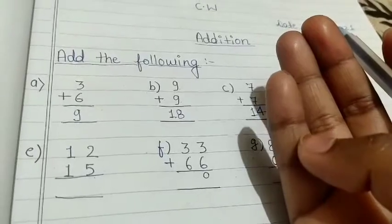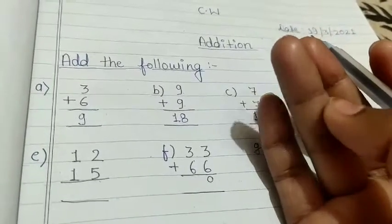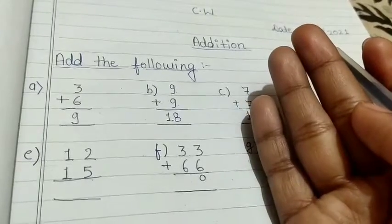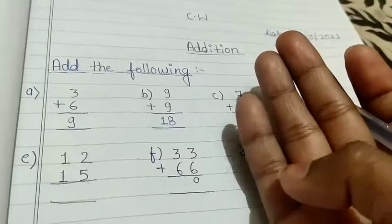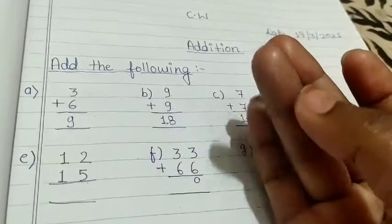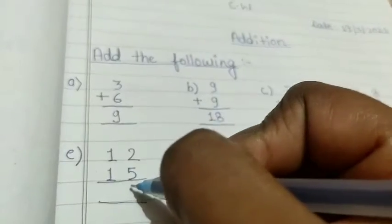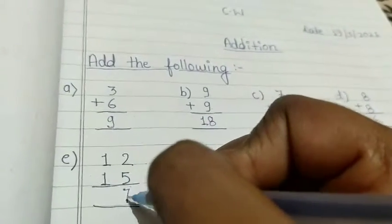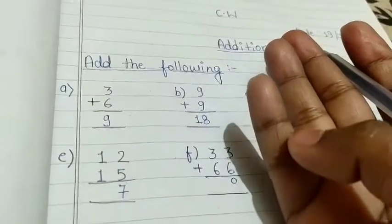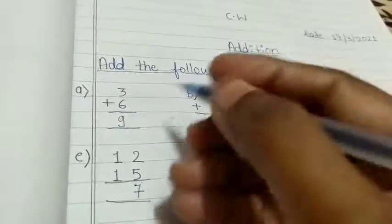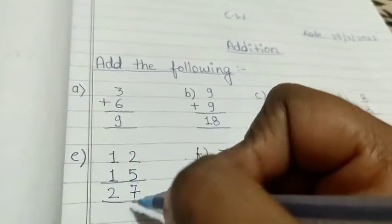Now problem e: two plus five. Count two — one, two. Add five — one, two, three, four, five. So two plus five equals seven. Count again: one, two, three, four, five, six, seven. Two plus five equals 7. Write it here: 7. And one plus one equals two. So we get the answer here: 27.